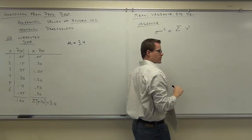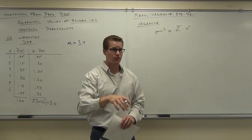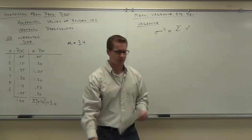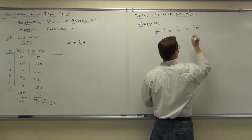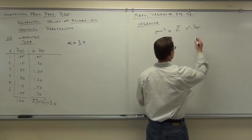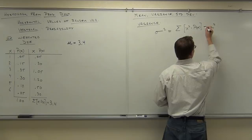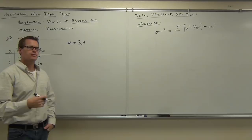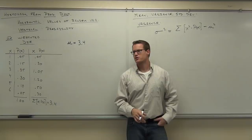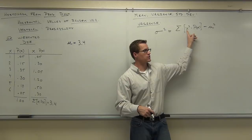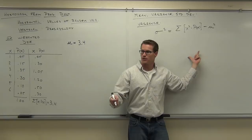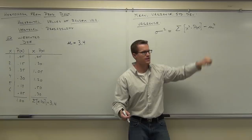Using order of operations: first, square your X values. Second, multiply those squared values by the corresponding probability. Third, add them all up. At the very end, subtract the mean squared. So you need to find the mean first before you can find the variance. Let's try that on our weighted die.